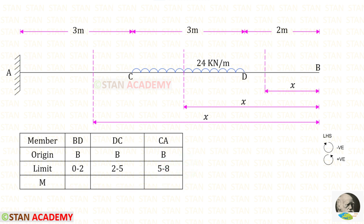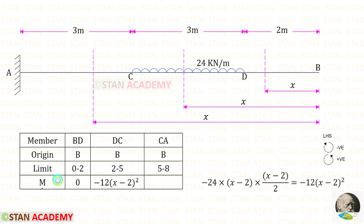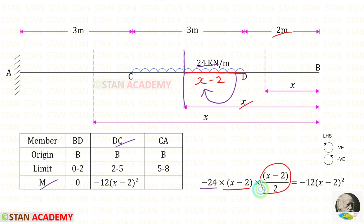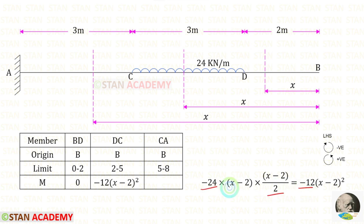Now we are going to find the bending moment M, measuring from point B using the left-hand side rule — clockwise is negative and anticlockwise is positive. In section Bd, there is no load up to this section, so the moment M will be 0. In section dc, we have UDL of 24 acting clockwise, so it is negative. The distance is (x minus 2), giving M = minus 12 times (x minus 2) squared.